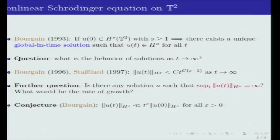So naturally the further question would be: is there actually an example of a solution which has this growth property, Sobolev norms that grow to infinity over time? And if such an example exists, then what would be the growth rate? The conjecture of Professor Bourgain would be that this growth rate is t^ε for any positive epsilon.